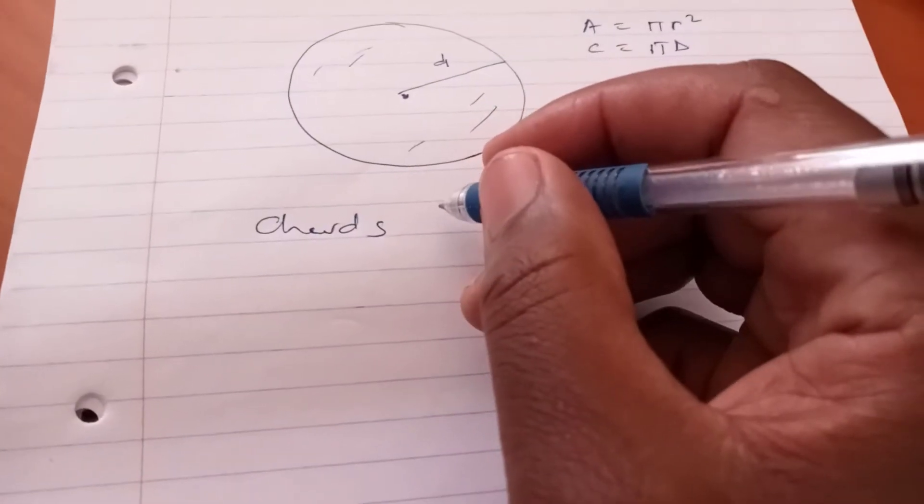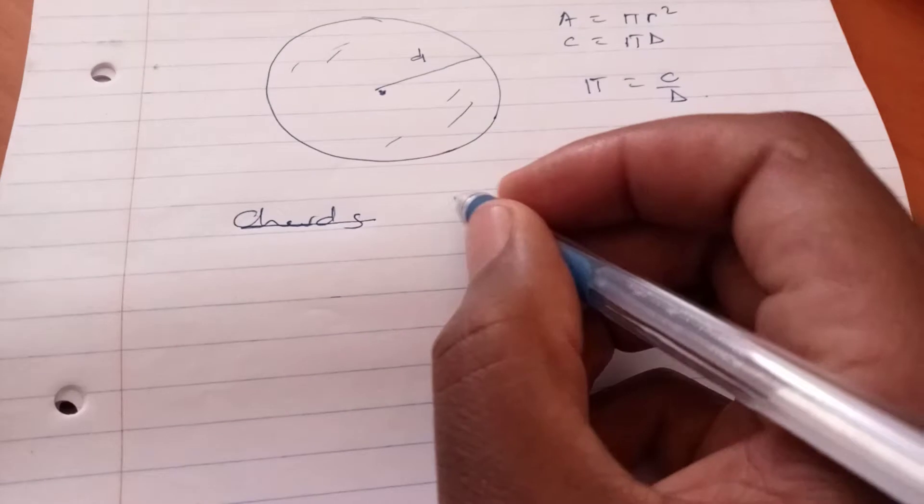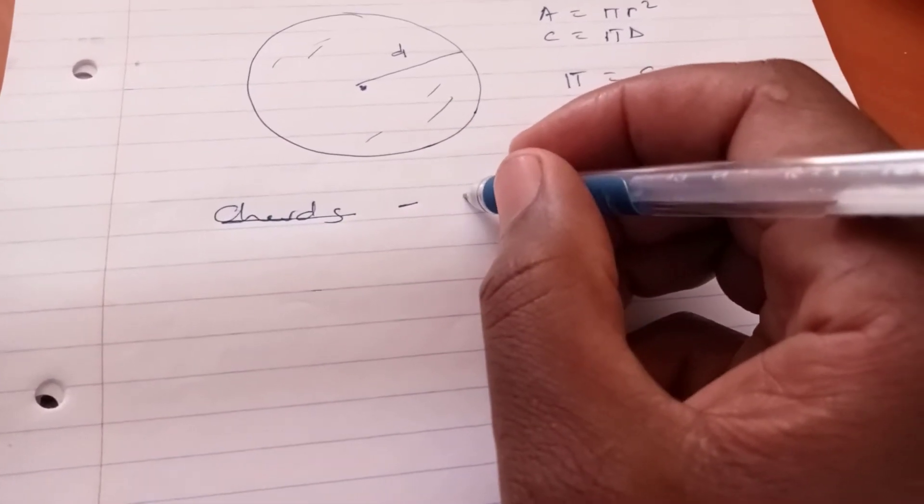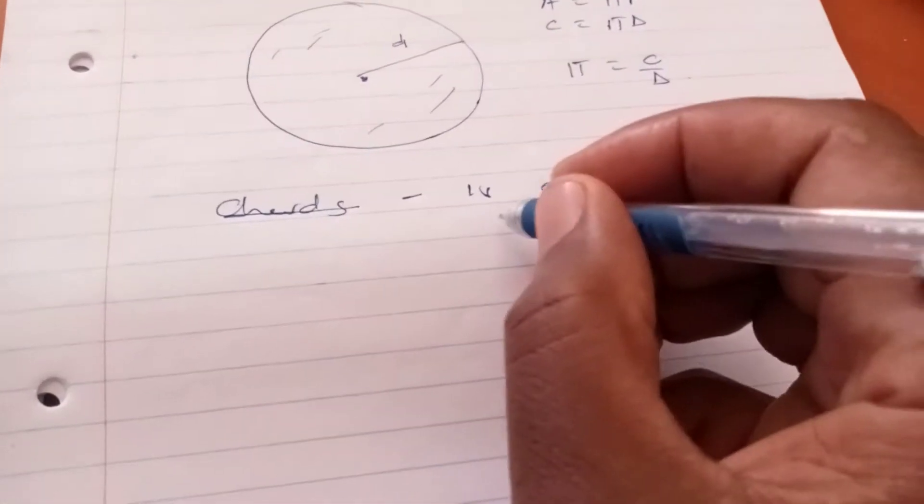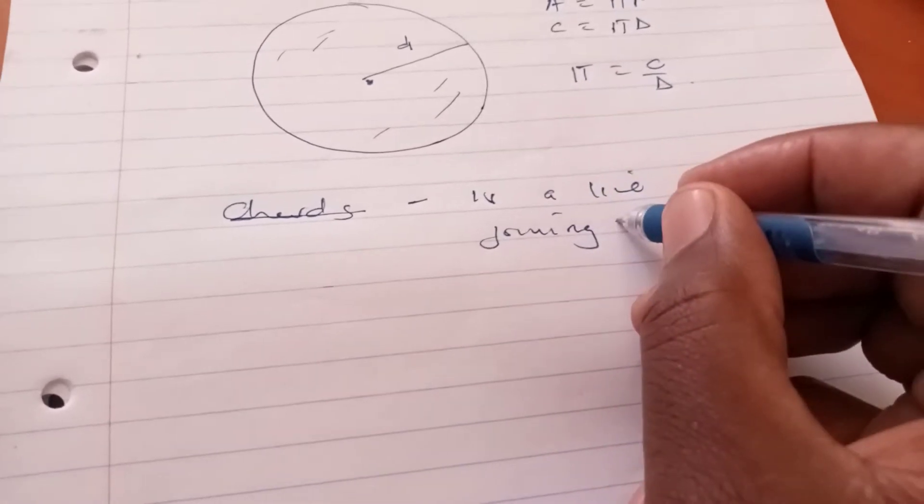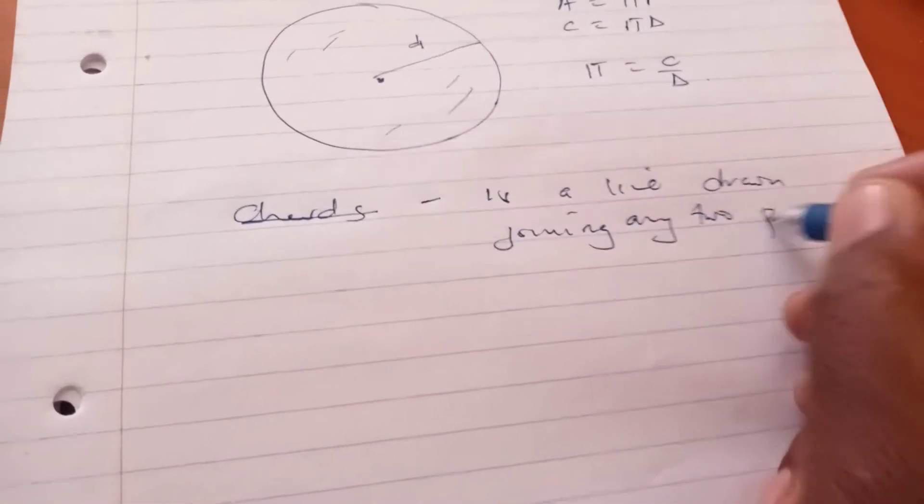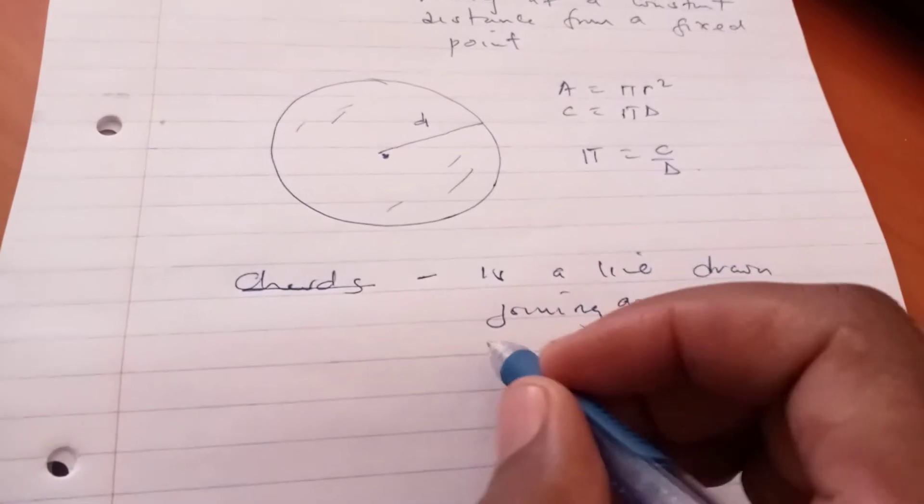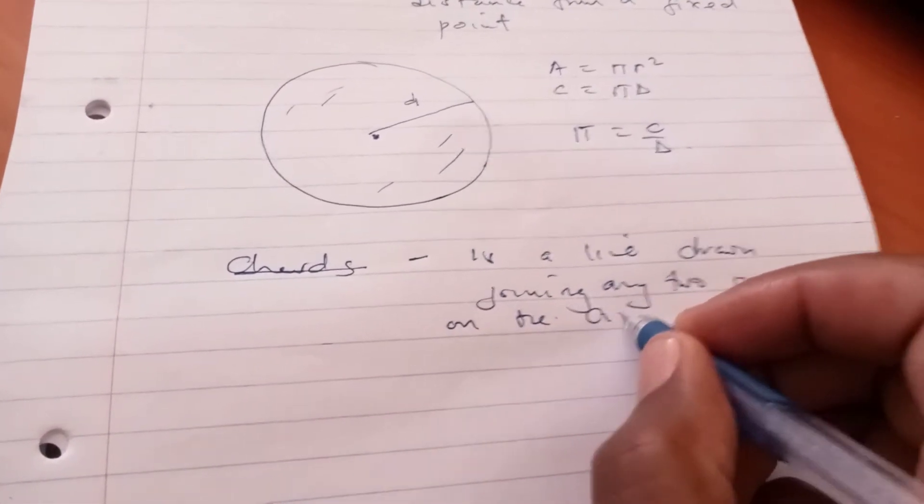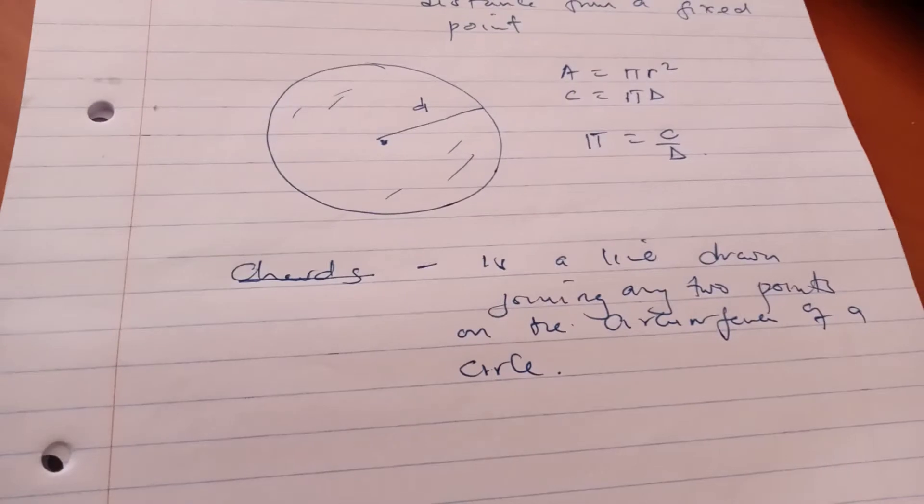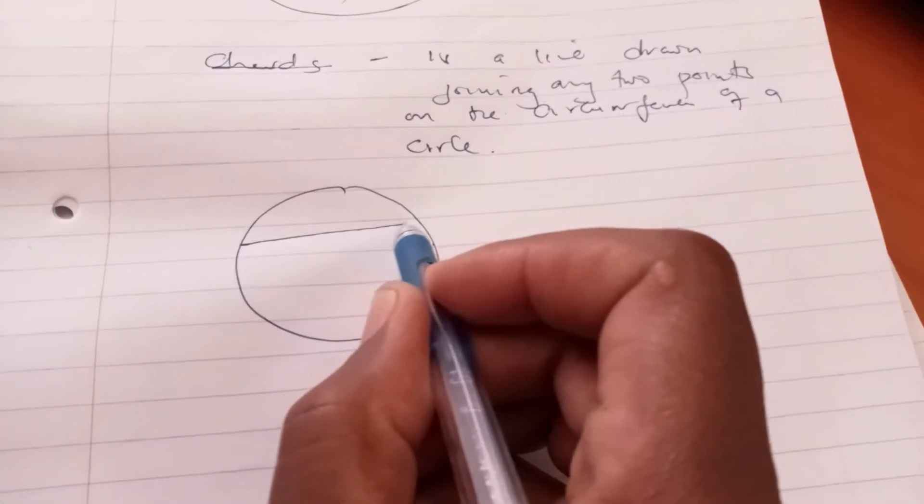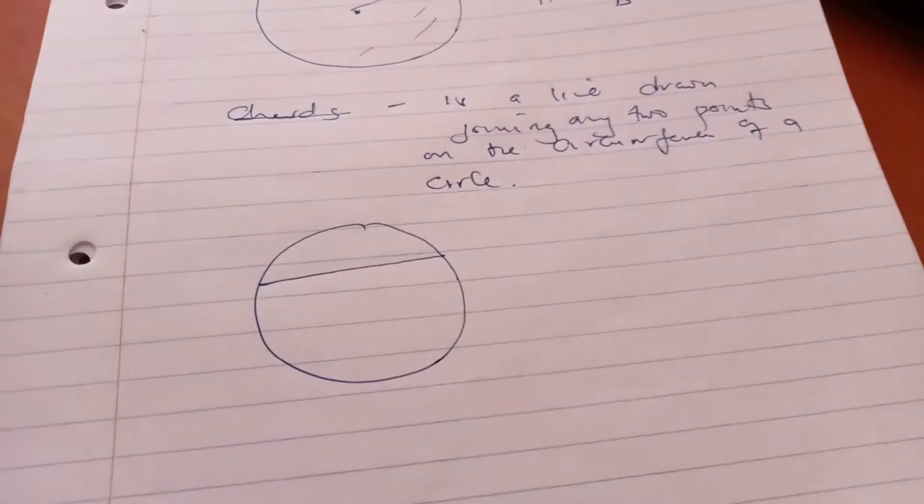Now, chords may intersect internally. By the way, before I go there, what is a chord? A chord is a line drawn joining any two points on the circumference of the circle. So if you have your circle, any line drawn touching any two points on the circumference, we call that one a chord.